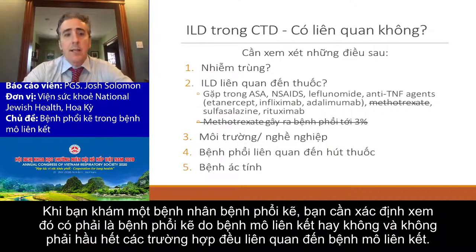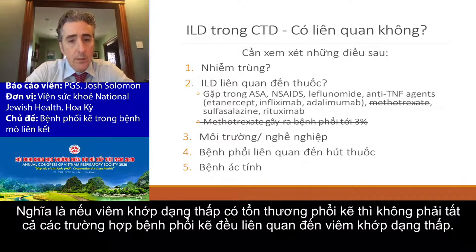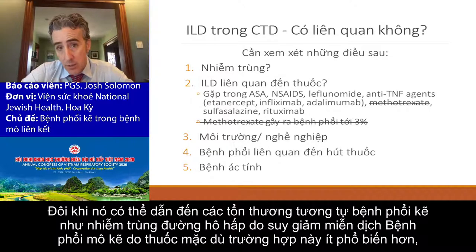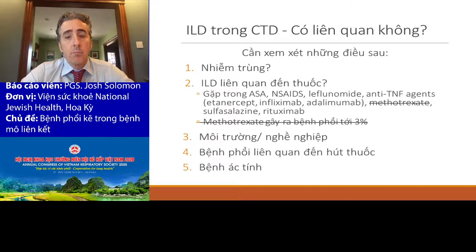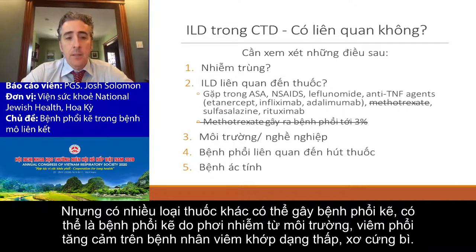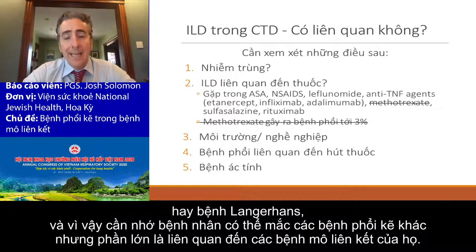When you see these patients, you really need to figure out whether this ILD is related to the connective tissue disease — and almost always it is. That doesn't mean patients with connective tissue disease can't get other things in their lungs. They're at risk for infection because they are immune suppressed. There is drug related interstitial lung disease, though this is less common. Methotrexate is crossed out because two publications this year lay to rest the idea that methotrexate causes interstitial lung disease. They can have environmental diseases — you can get hypersensitivity pneumonitis if you have RA or scleroderma — and smoking related lung disease such as DIP, RB-ILD, and Langerhans. But most of the time their ILD will be related to their connective tissue disease.